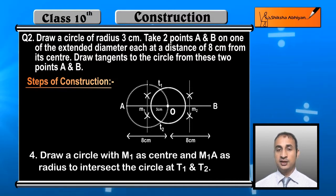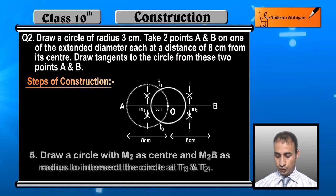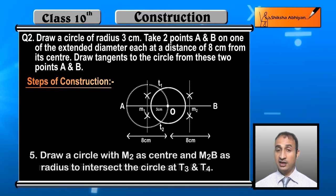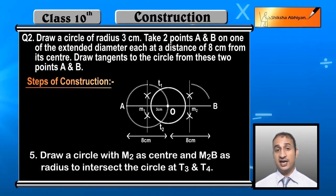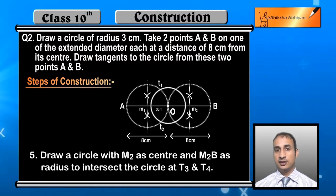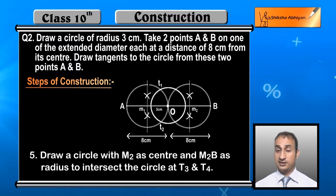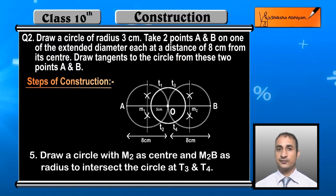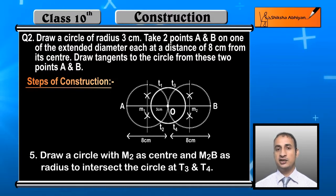Similarly, draw a circle with M2 as center and M2B as radius. This circle cuts the original circle at points T3 and T4.